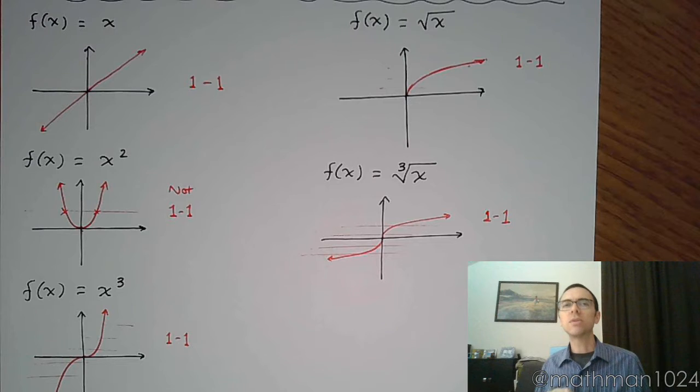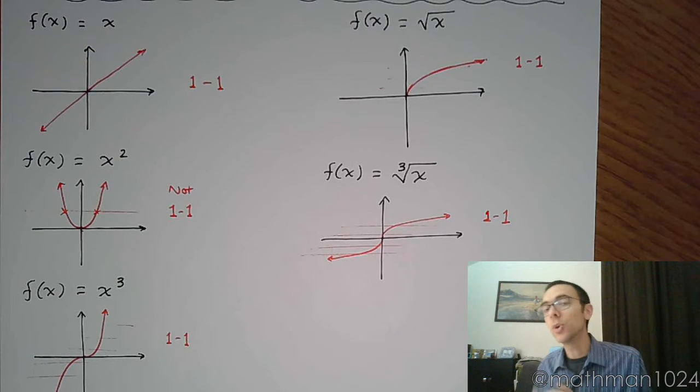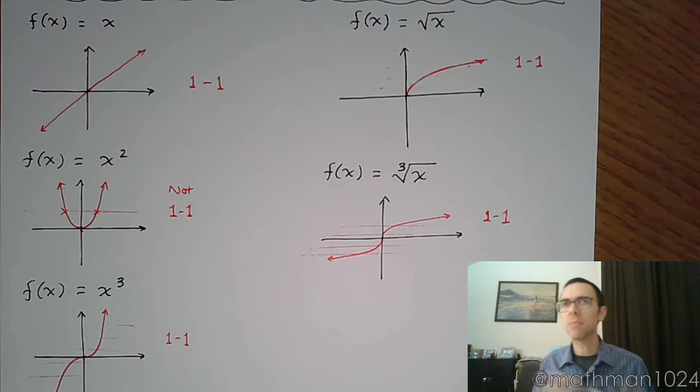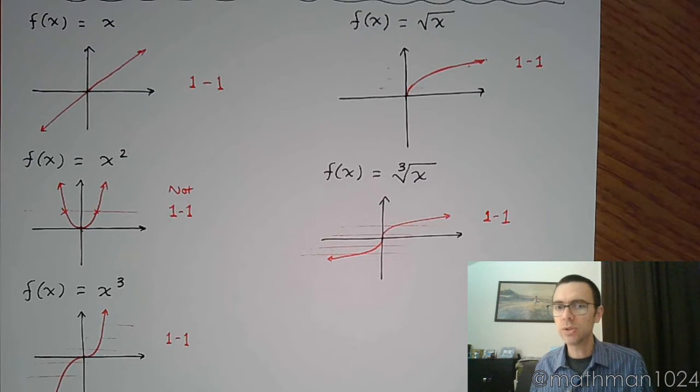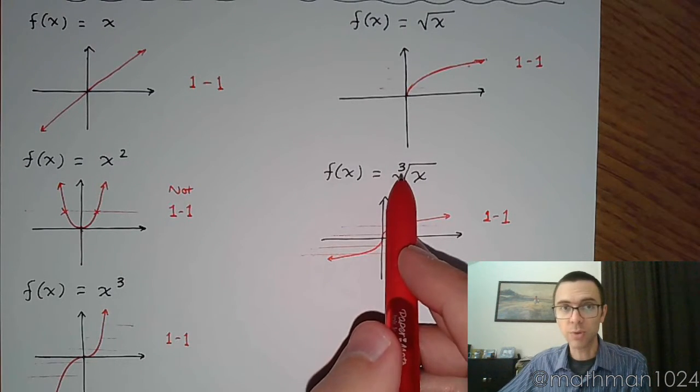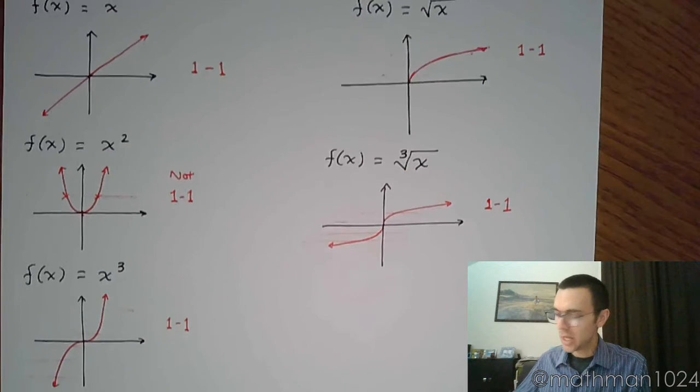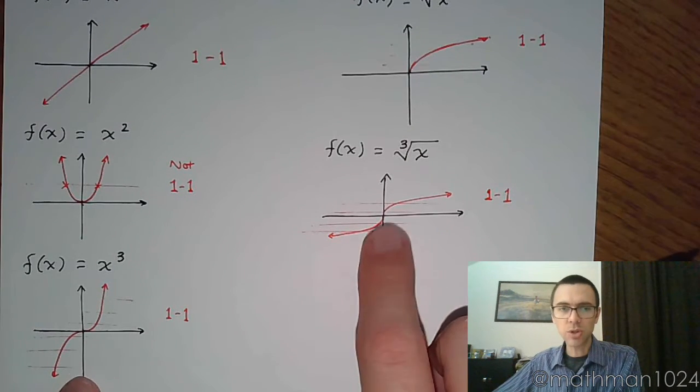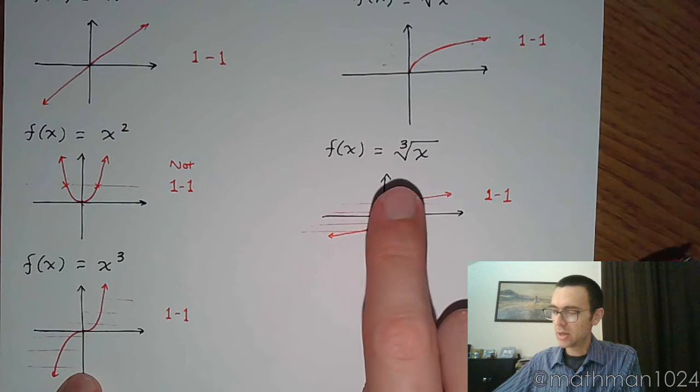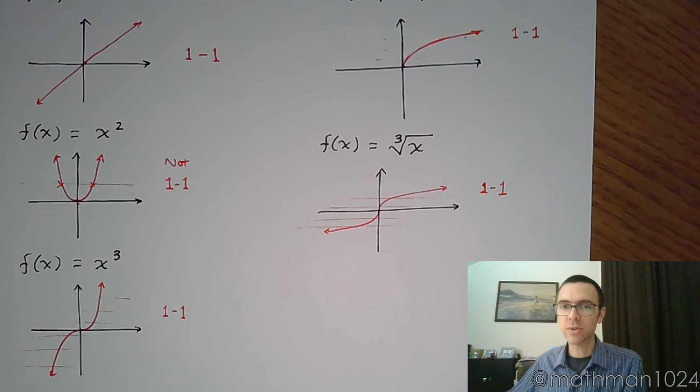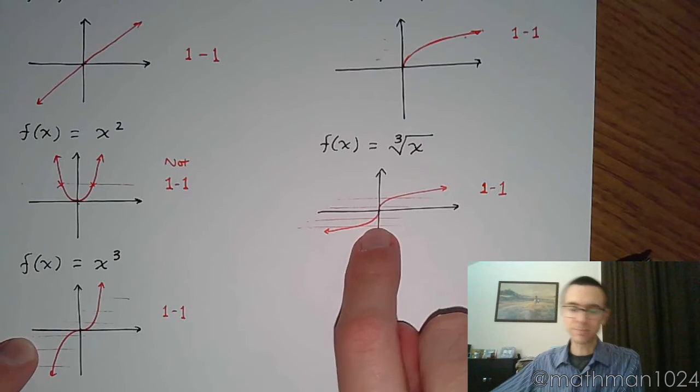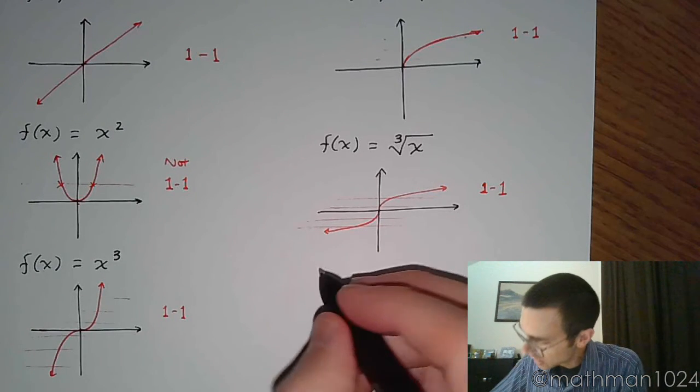You think about what would be the inverse of a cube root - how would you undo a cube root? It goes back to that power property. You'd use a power that matches the index, which means you would use something to the third power, which would be x to the third. And notice how similar these shapes are to one another. Well, they're inverses of each other. They're both one-to-one, which means they have an inverse, and here they are.